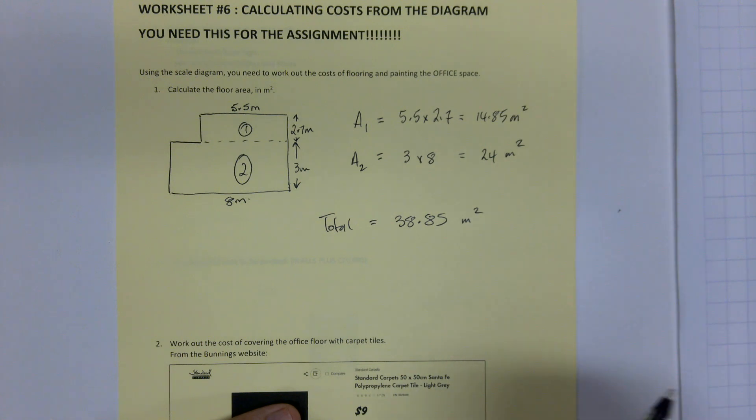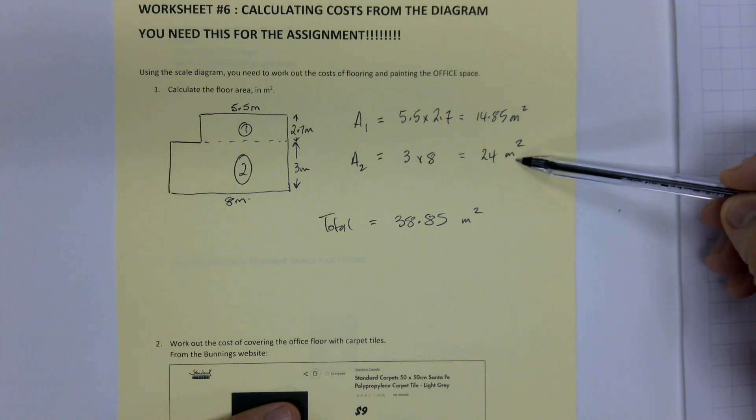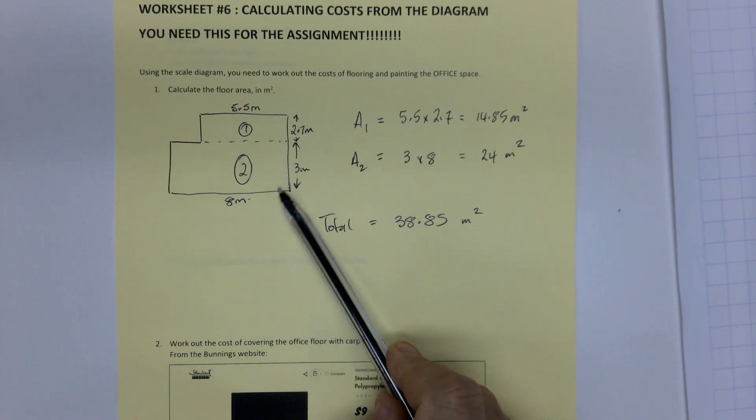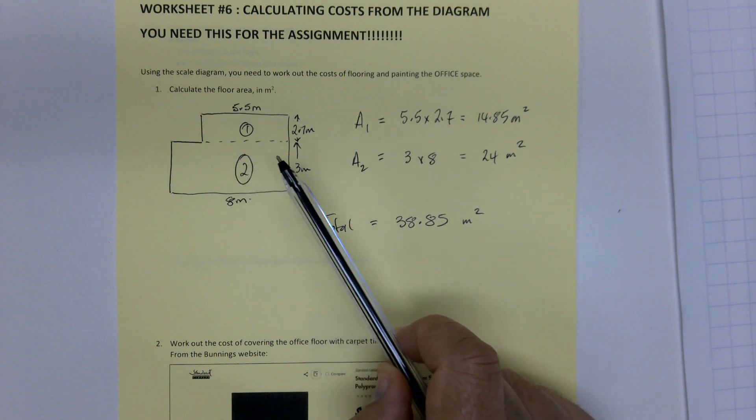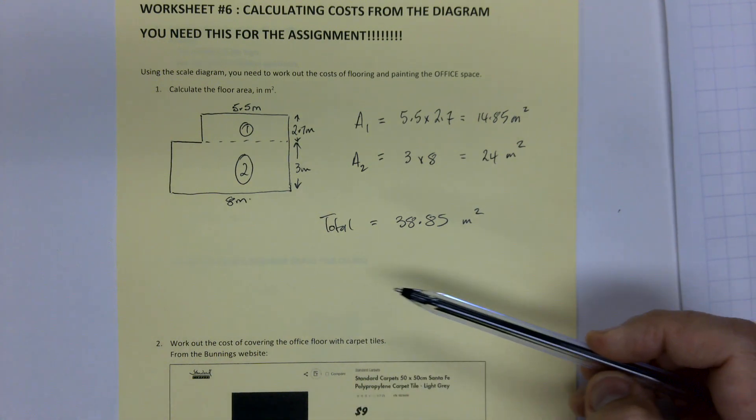Two things to just reiterate here. First of all, there's a separate line for each bit and I've got the units at the end of each bit. That is how you're going to get the communication marks. And then I've added it up at the bottom. Just to reiterate as well, this does not have to be to scale. You have already done the scale drawing with it. It just has got to be neat and in proportion. So that's the total area.